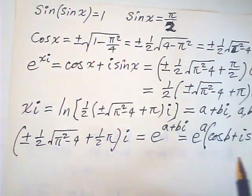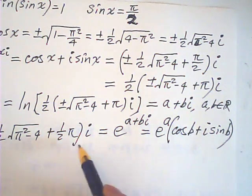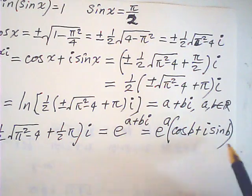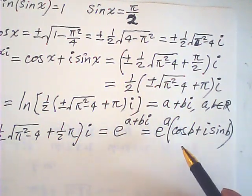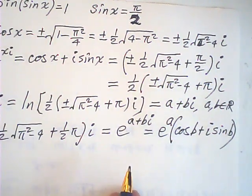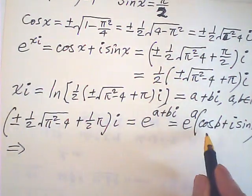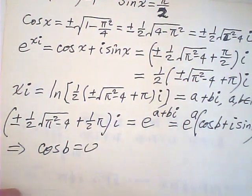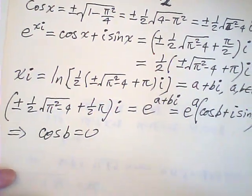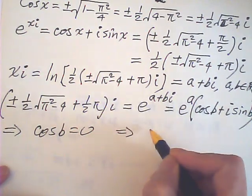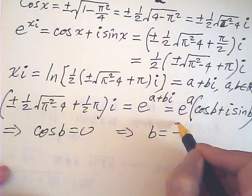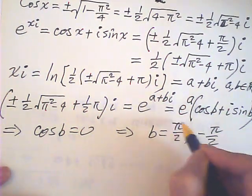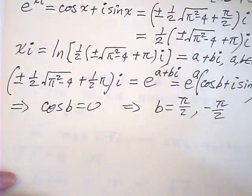Now, since this is an imaginary number, this complex number, the real part must be zero. This means that cosine b must be zero, which means that b is equal to half pi or negative half pi.